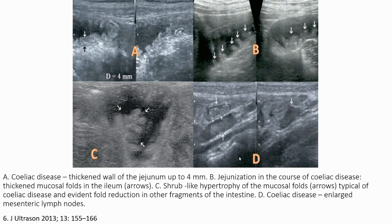This image shows a case of celiac disease. Image A: the jejunum has wall thickness up to 4 mm. Image B shows jejunization in the course of celiac disease — we can see the jejunum mucosal folds in the ileum. Images C and D show shrub-like hypertrophy of the mucosal folds, typical of celiac disease, and evidence of reduced peristalsis. Image D also shows enlarged mesenteric lymph nodes.